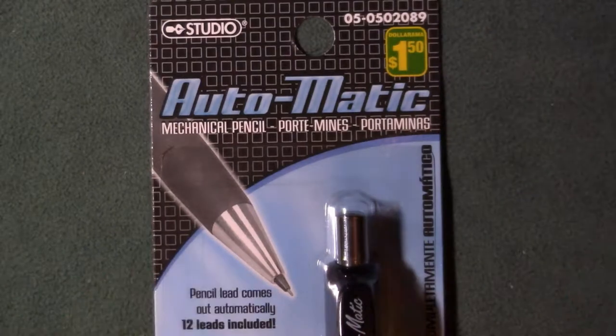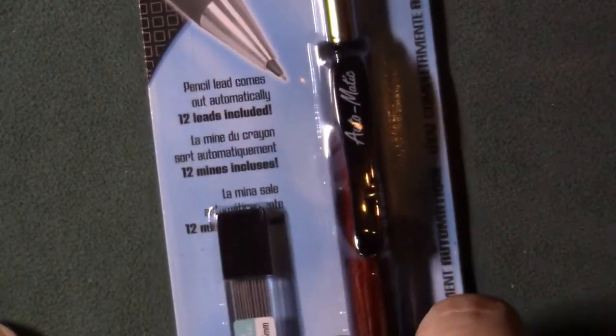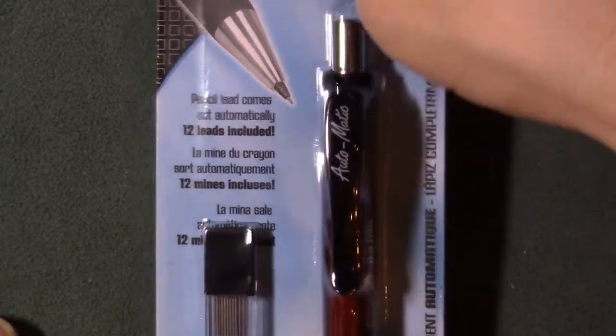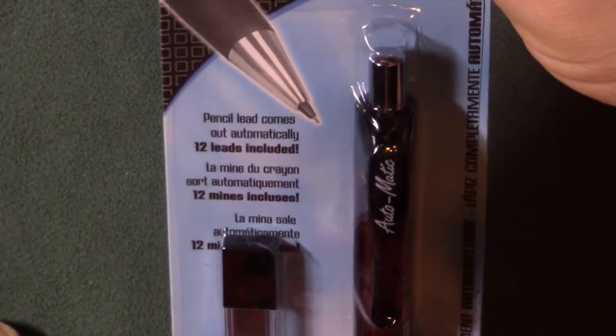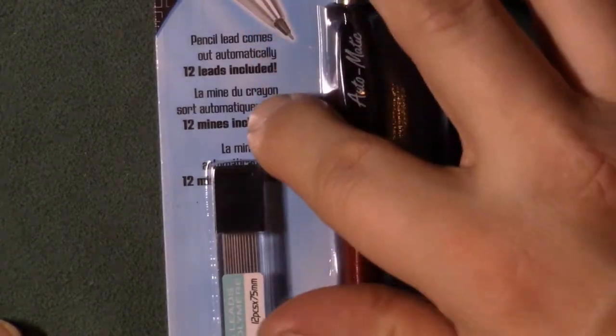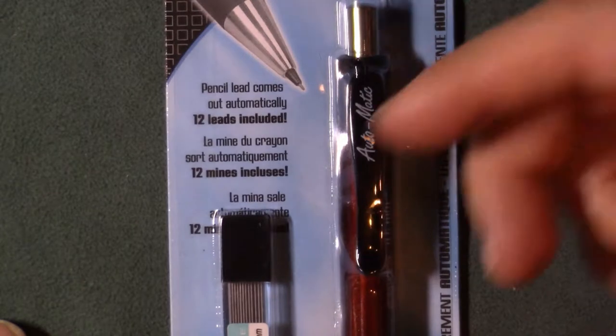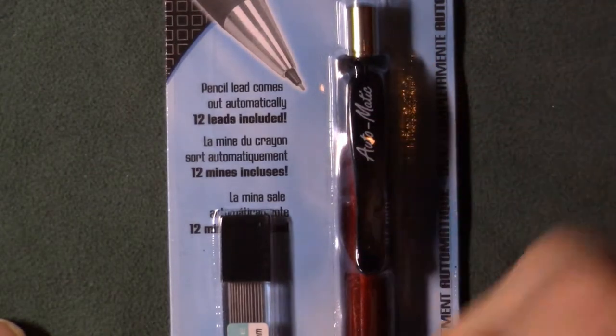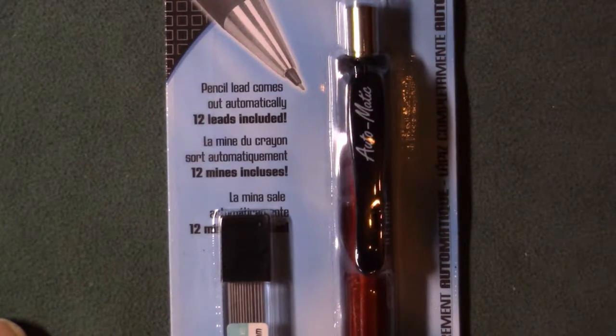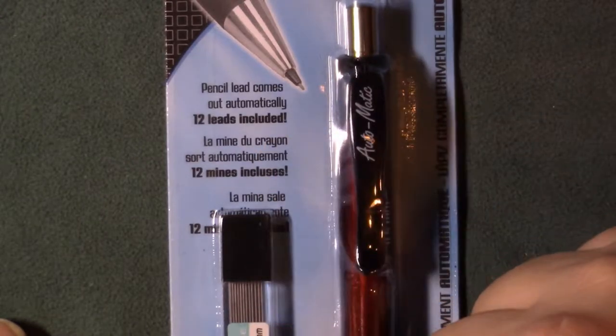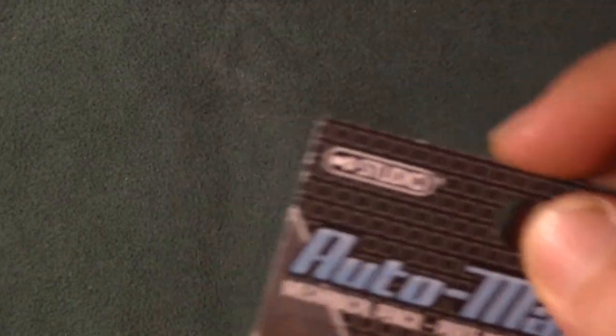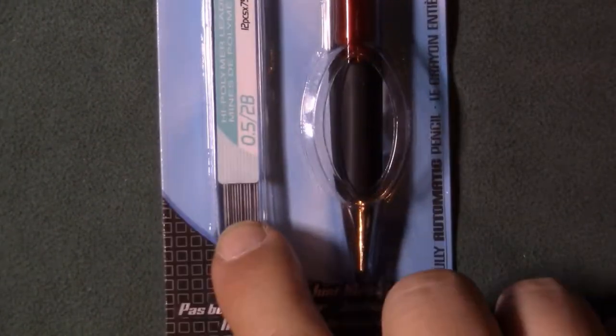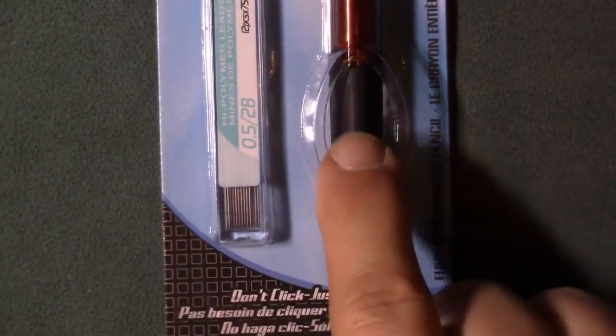It's automatic mechanical pencil. Of course you get the pencil here itself and then the pencil lead comes out automatically. So I guess as you write with it, the lead actually advances forward. It comes with a pack of 12 leads and this mechanical pencil is actually a 0.5 millimeter pencil.